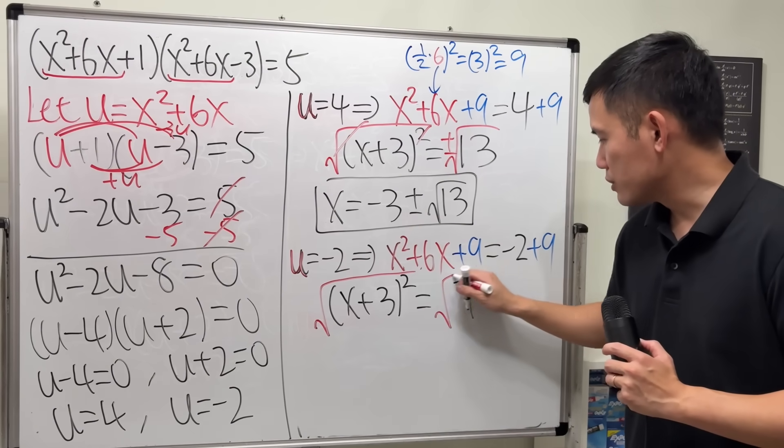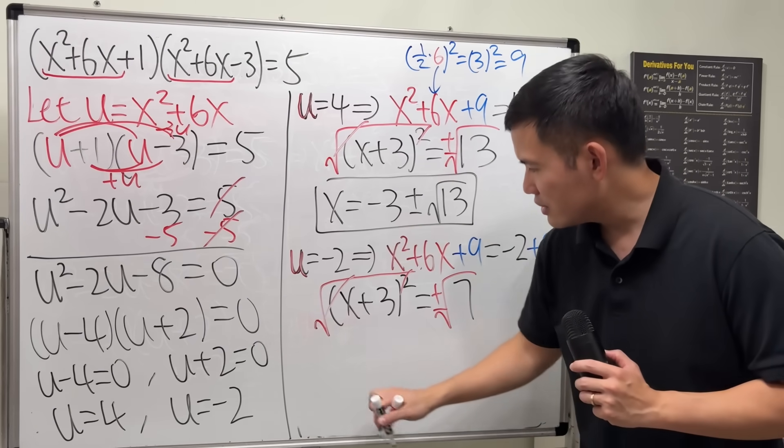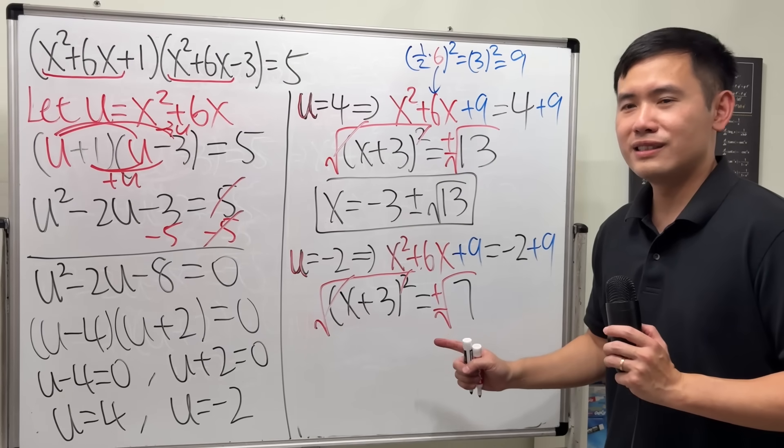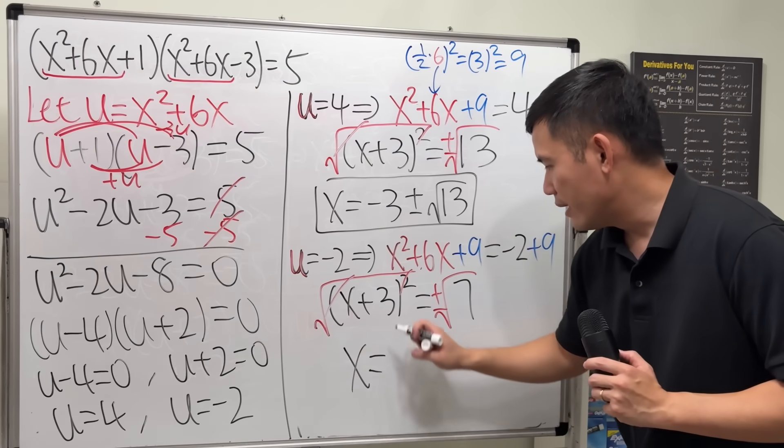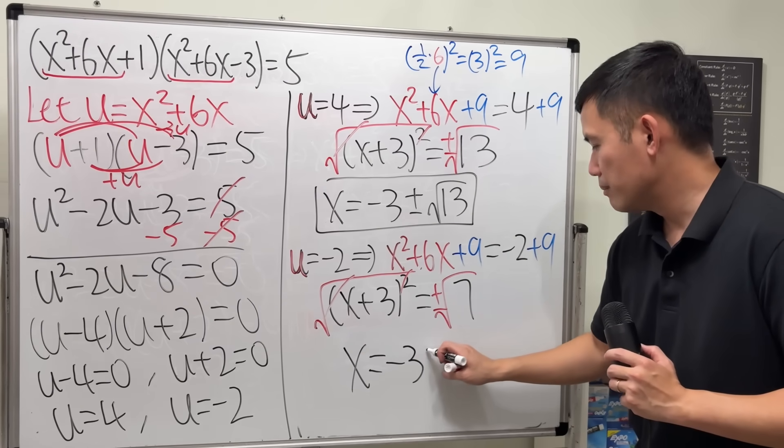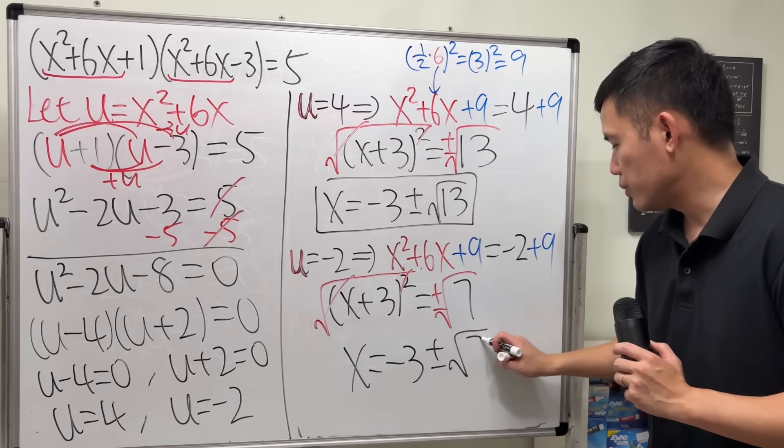Still, take the square roots to both sides, plus or minus, cancel this, subtract 3 to both sides. Ladies and gentlemen, x is equal to negative 3, plus or minus, square root of 7.